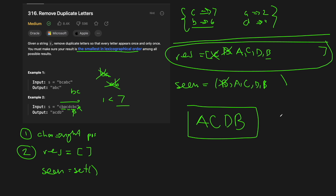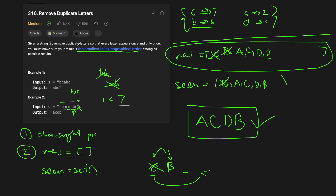Our final result is A, C, D, B — which is what we expect. To review: first we build a map of each character to its last position. Second, we initialize a result stack and a seen set, then iterate left to right. Whenever two adjacent characters are out of order and the earlier one still appears later in the string, we pop it from our result so we can achieve the lexicographically smallest solution.